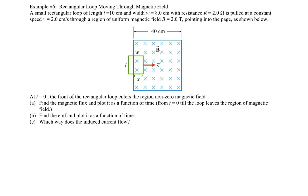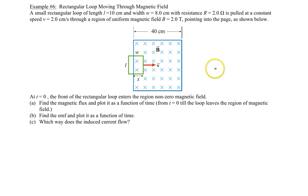Welcome to example number 6. In this example we have a rectangular loop moving through a magnetic field. The loop's dimensions of length and width along with its resistance are given. We are also told that it is moving to the right at constant velocity into, then through, and then out of the magnetic field. In part A, we are asked to plot the magnetic flux for this loop as a function of time.